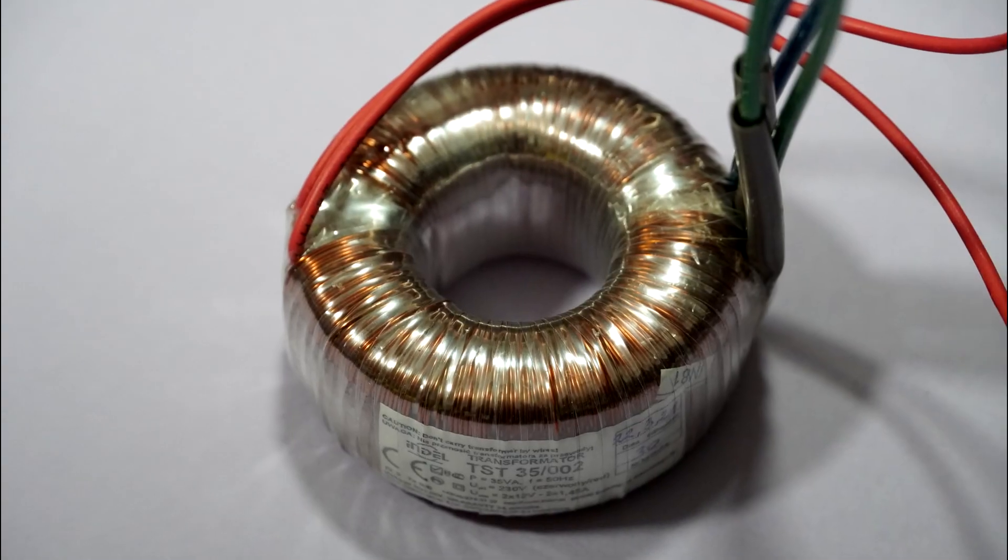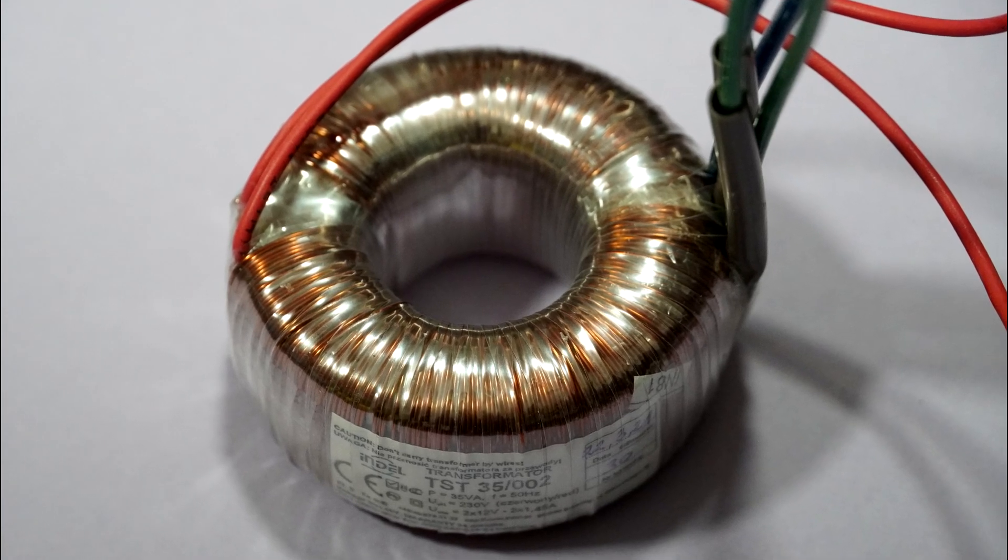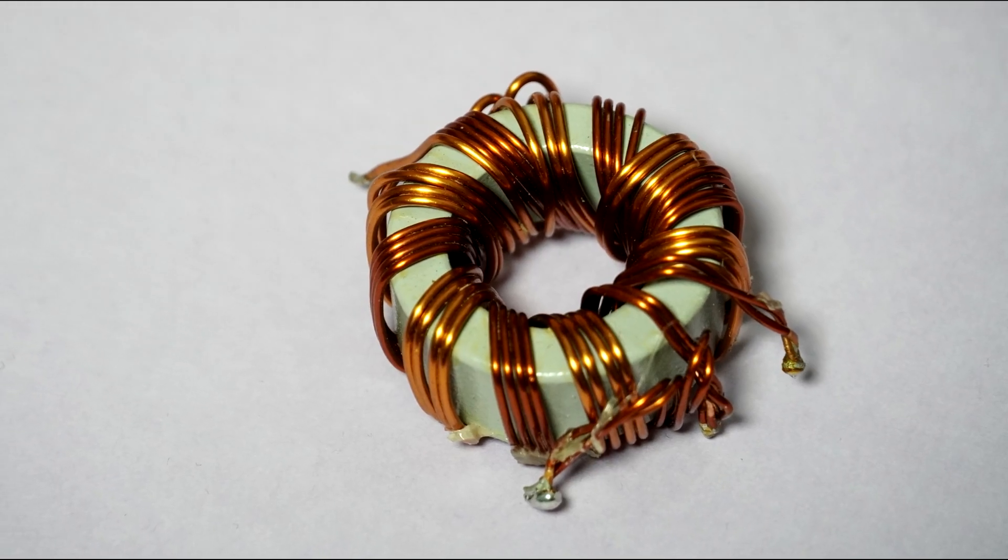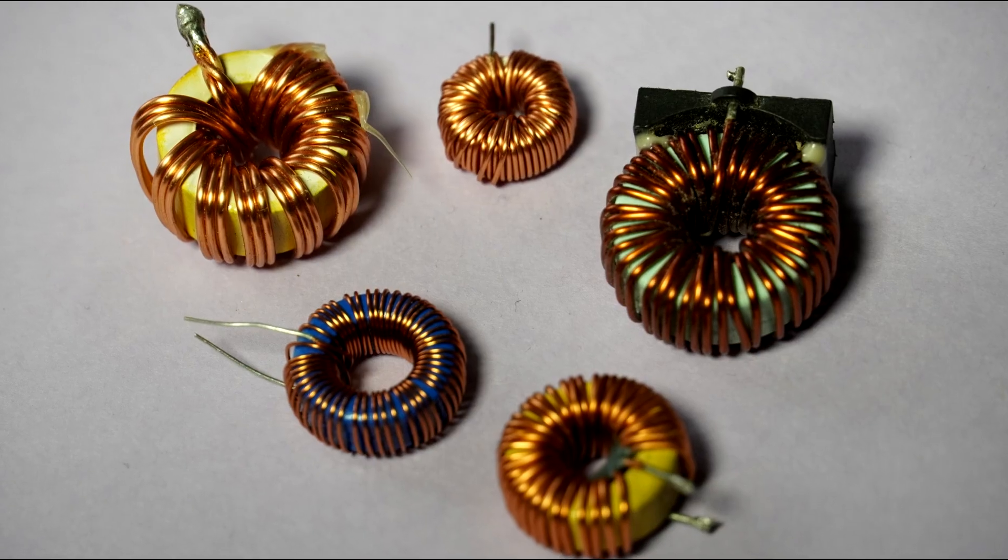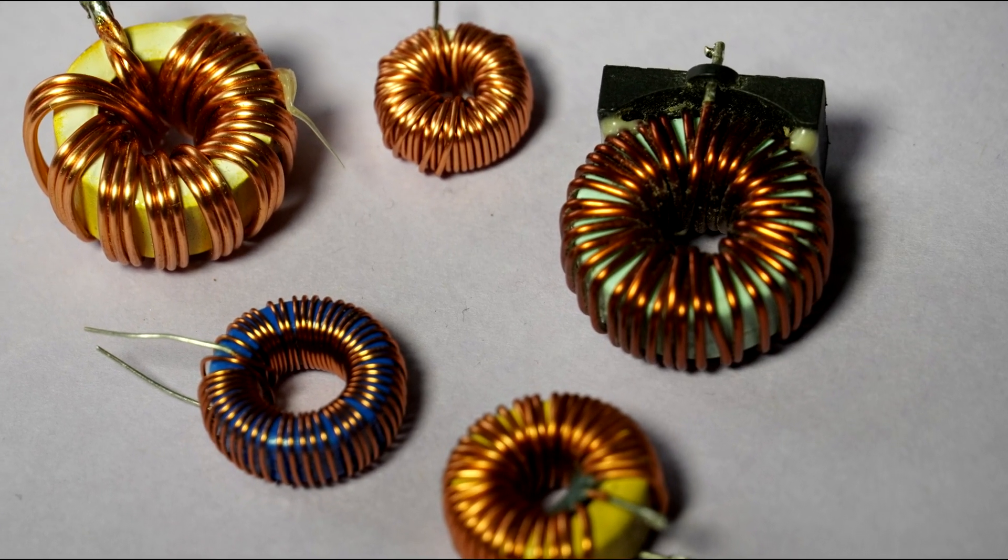Toroid shaped inductors and transformers are quite widespread in modern electronics, starting from 50-60 Hz power transformers, switching converter transformers, common mode chokes, and all sorts of inductors in between. Even though it's much harder to apply turns to such a core, its advantages include smaller size for the same power, better quality factor, and better magnetic field containment.